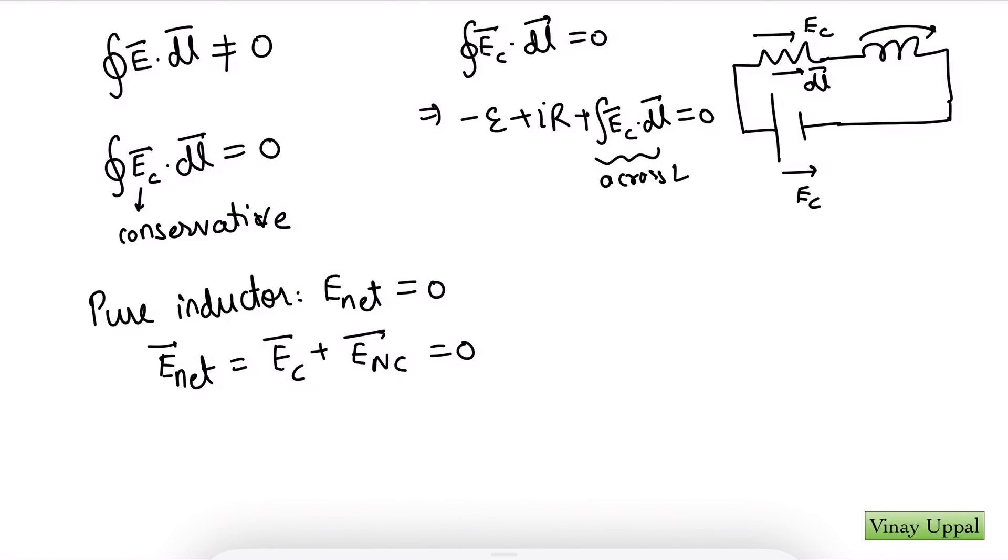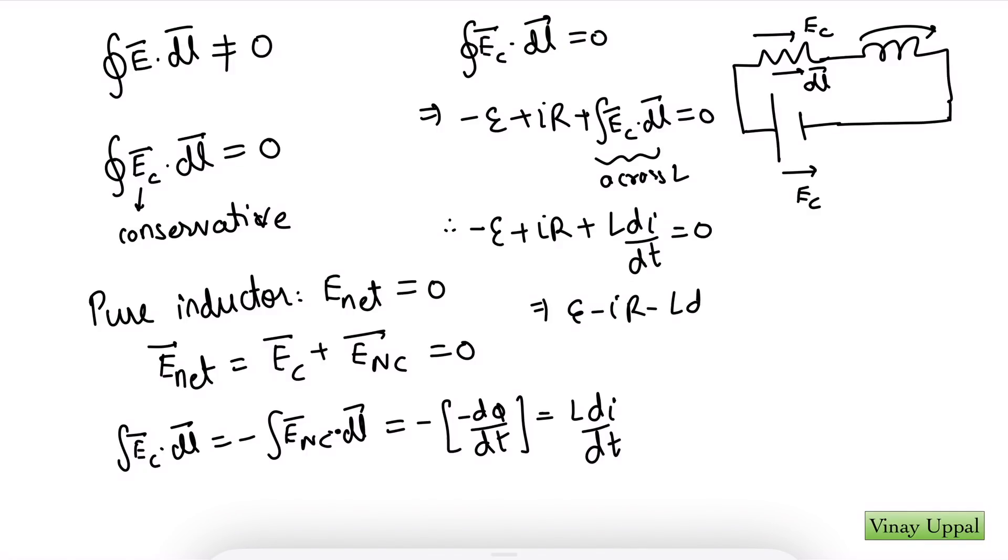Now, this is where the magic happens. I have integral E_C dot dl as negative of integral non-conservative dot dl because the sum is zero. But what is the integral non-conservative dot dl? That is nothing but minus dφ by dt by Faraday's law. And dφ by dt was Ldi by dt. So this becomes Ldi by dt. And therefore, I have minus E plus IR plus Ldi by dt is zero. And this is nothing but my loop law. And this is why loop law works.